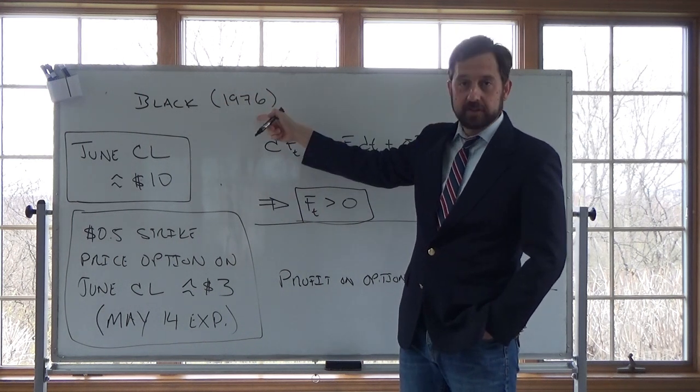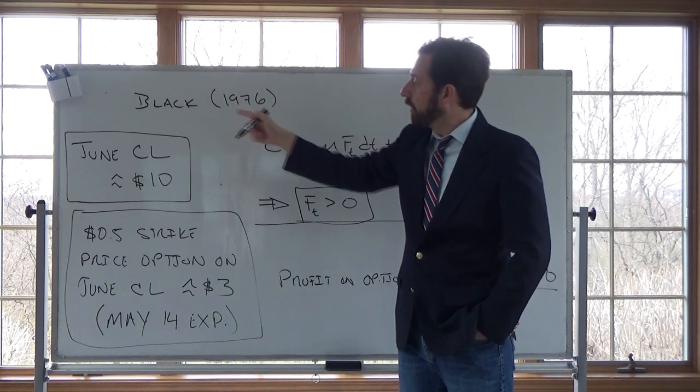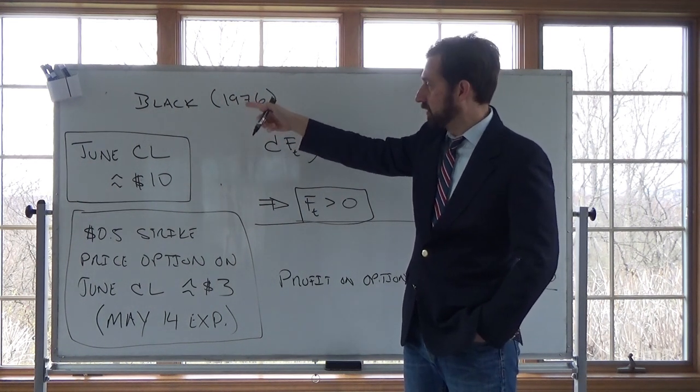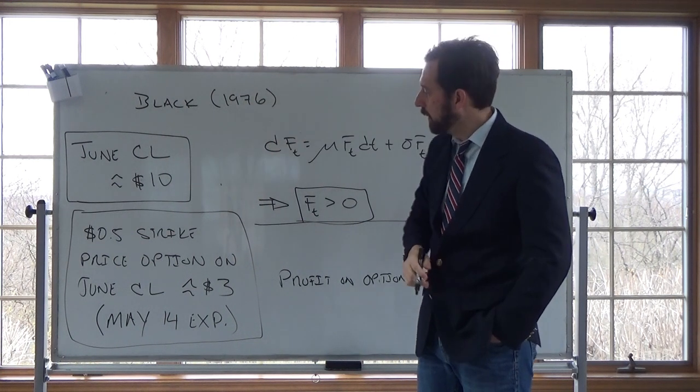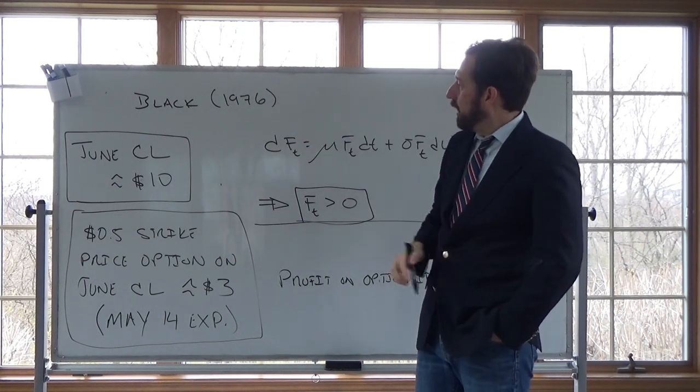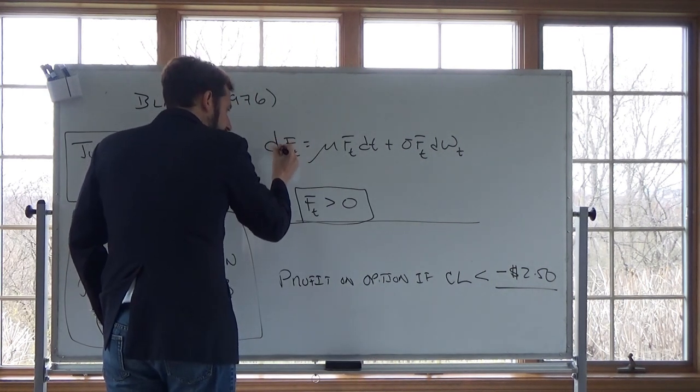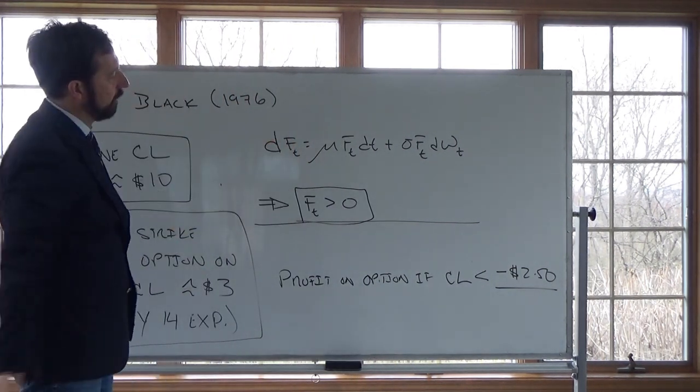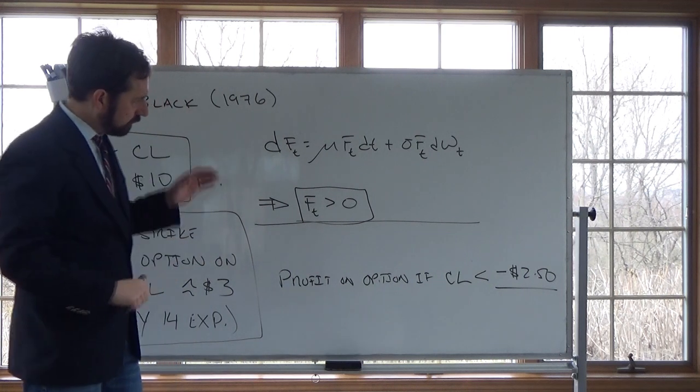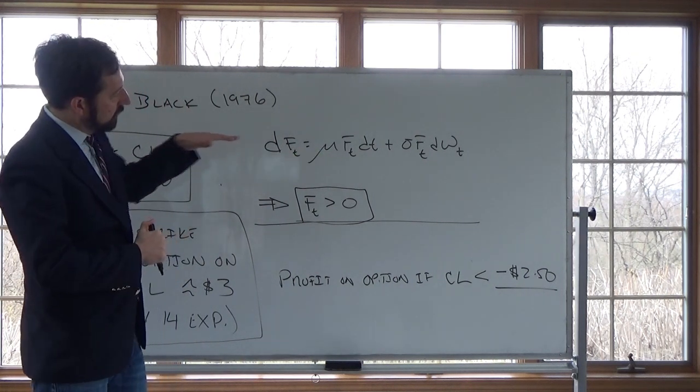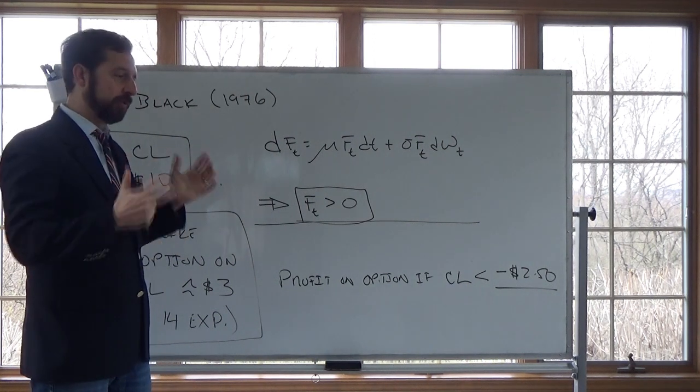The Black-Scholes model was 1973, but after that Black came out with a model specifically for futures options. So this is Black 76. The Black 1976 model assumes, the option pricing model assumes, that this is how futures prices behave. And this should look somewhat familiar to you. This is the same process that we use for stocks.